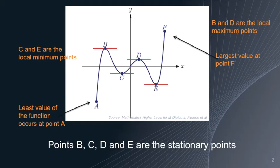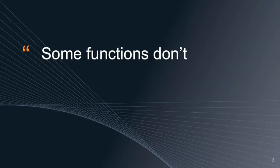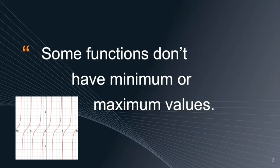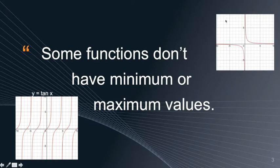When solving optimization problems, you have to consider whether there are values bigger than the local maximum or lower than the local minimum points. Also be aware that some functions don't have minimum or maximum values — examples include y = tan x and y = 1/x.